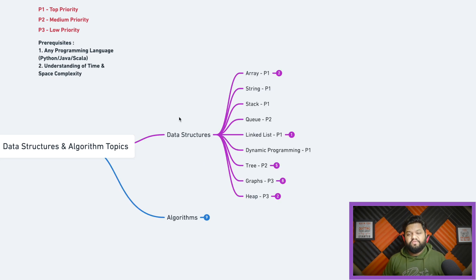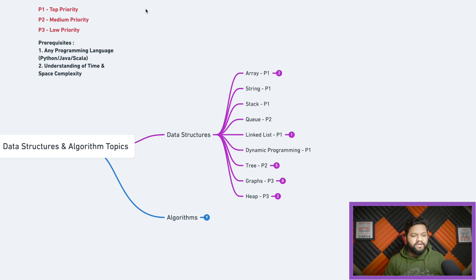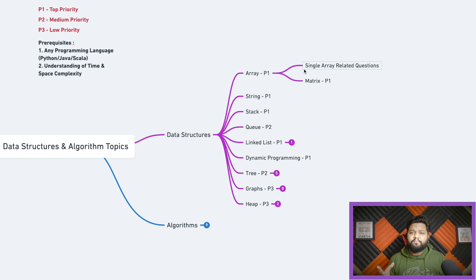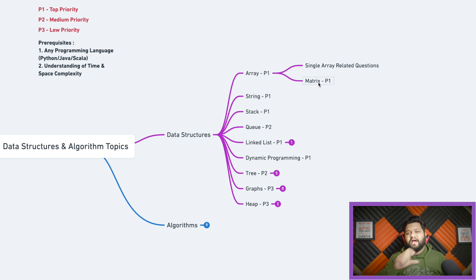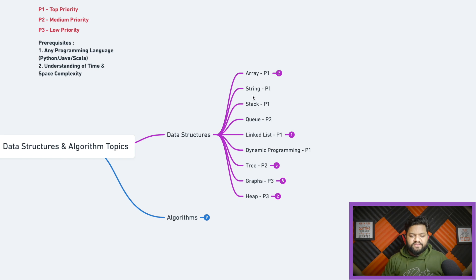In the data structures section, the first topic is arrays, labeled P1 — top priority. There are two types: questions related to a single array (1D array) and matrix questions (2D array representation). For matrices, sample questions include searching for a particular element in a sorted matrix, or finding the number of ones in a specific row. Next is strings — also P1 — with many good questions such as finding permutations and printing all anagrams from a given list of strings.